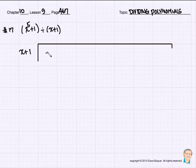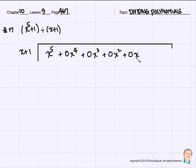So we got x to the 5th plus 0x to the 4th plus 0x cubed plus 0x squared plus 0x and then finally plus 1. There's our synthetic division. We're faking the polynomial out by filling in things that have zero terms in there.